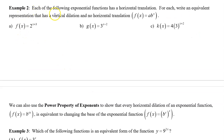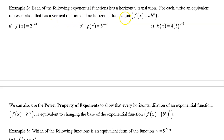Example 2: Each of the following exponential functions has a horizontal translation. For each, write an equivalent representation that has a vertical dilation and no horizontal translation.